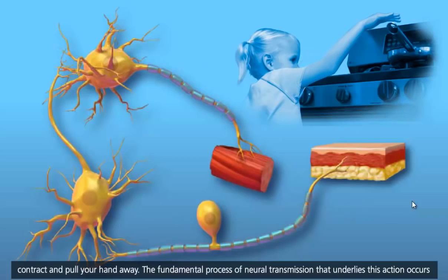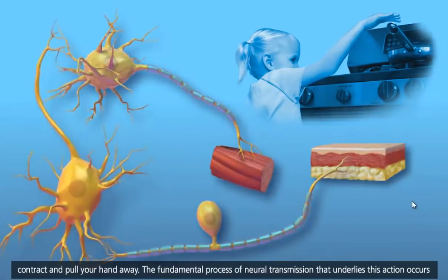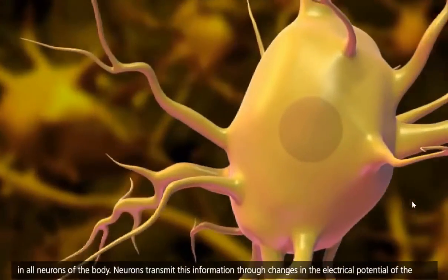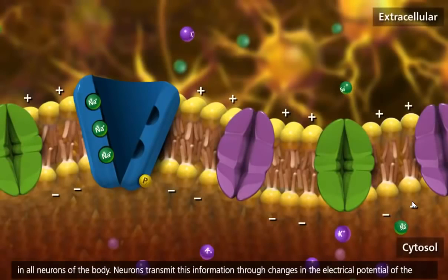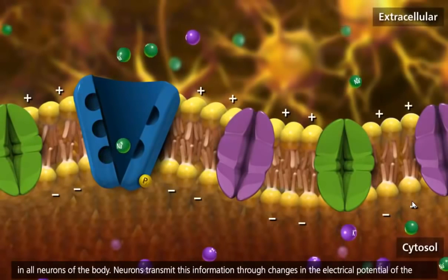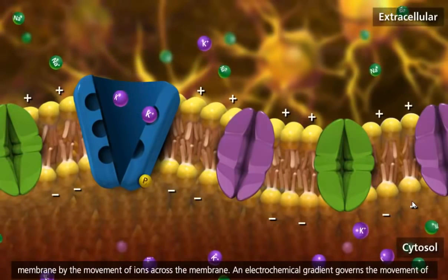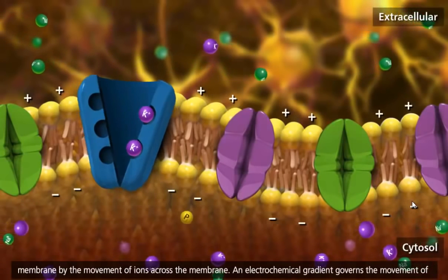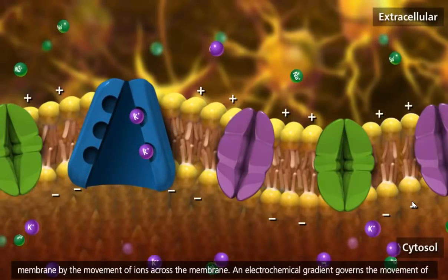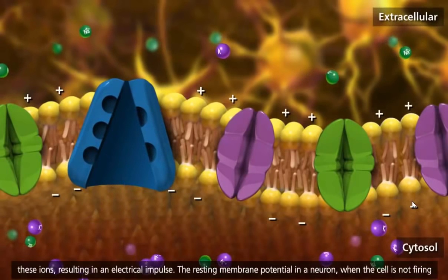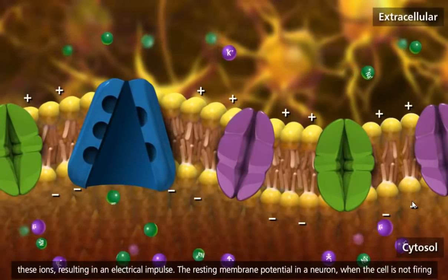The fundamental process of neural transmission that underlies this action occurs in all neurons of the body. Neurons transmit this information through changes in the electrical potential of the membrane by the movement of ions across the membrane. An electrochemical gradient governs the movement of these ions, resulting in an electrical impulse.